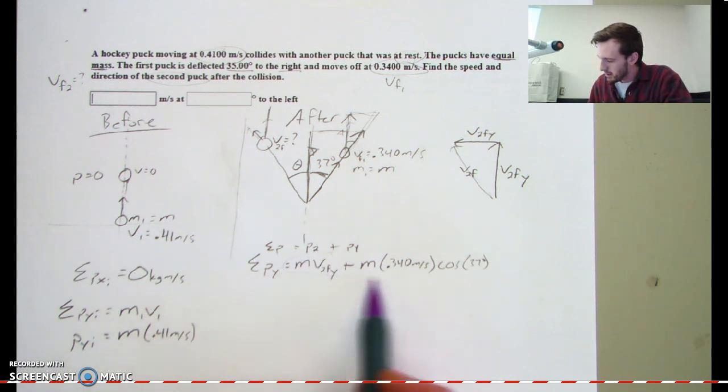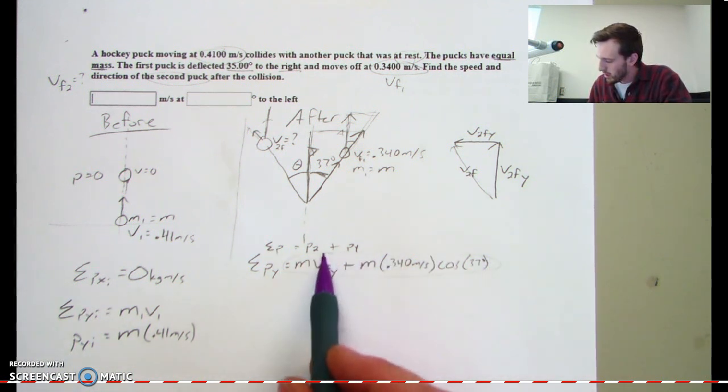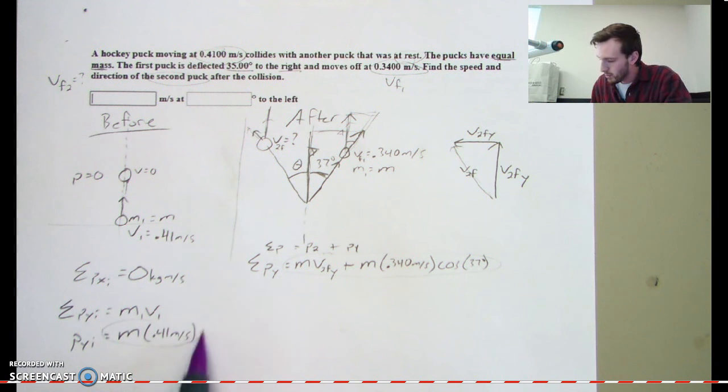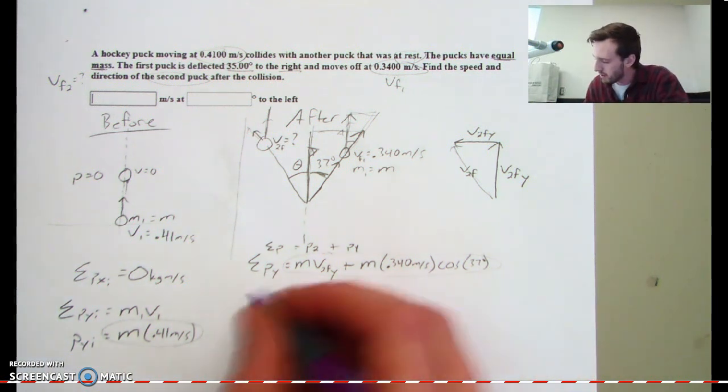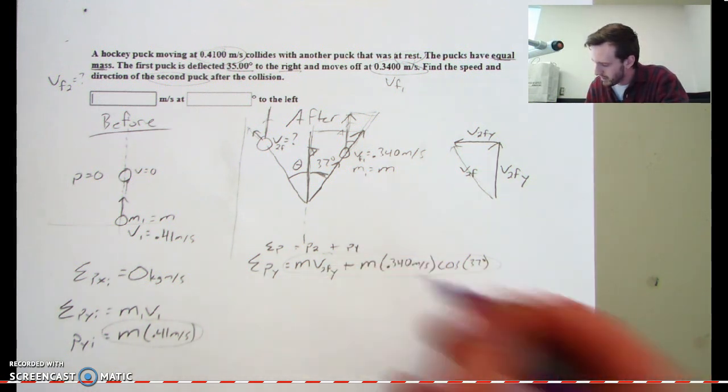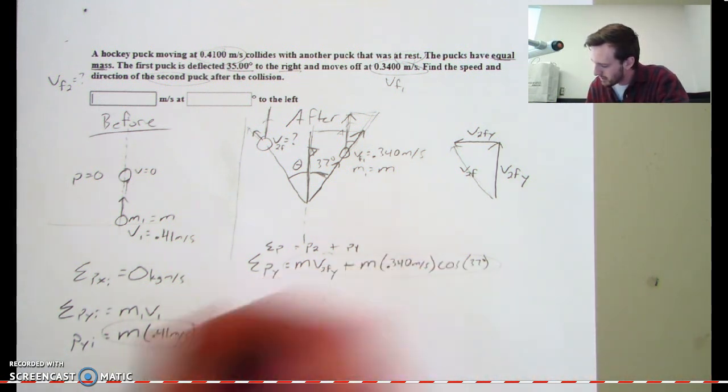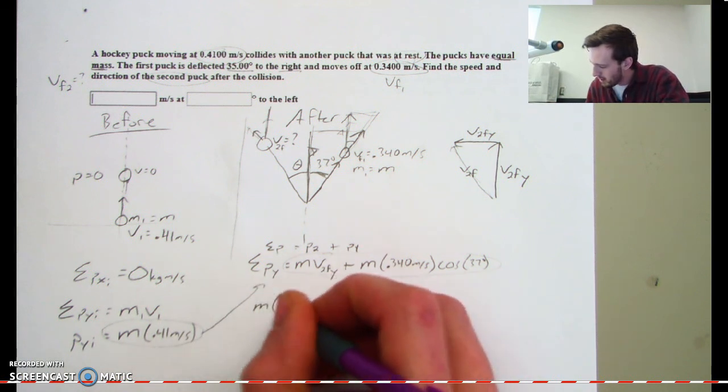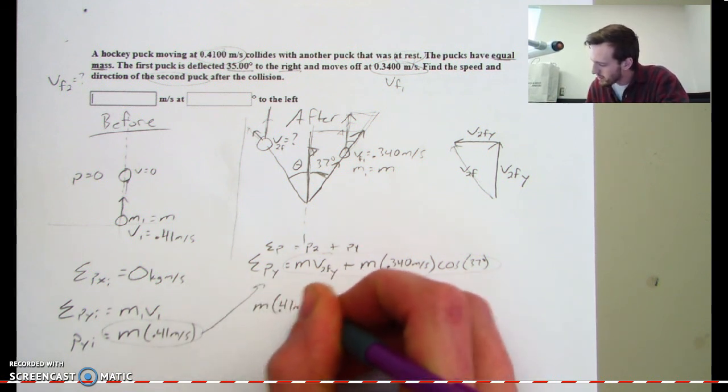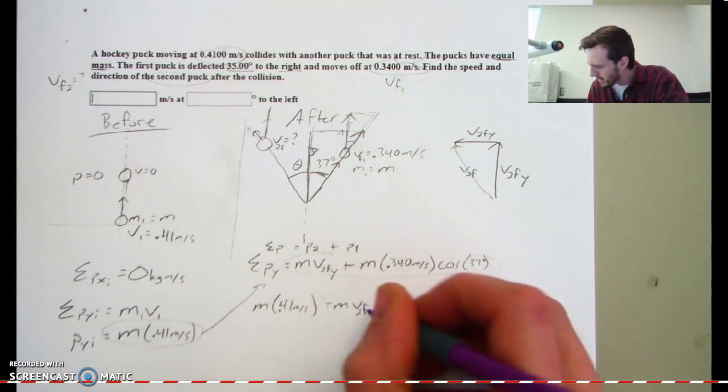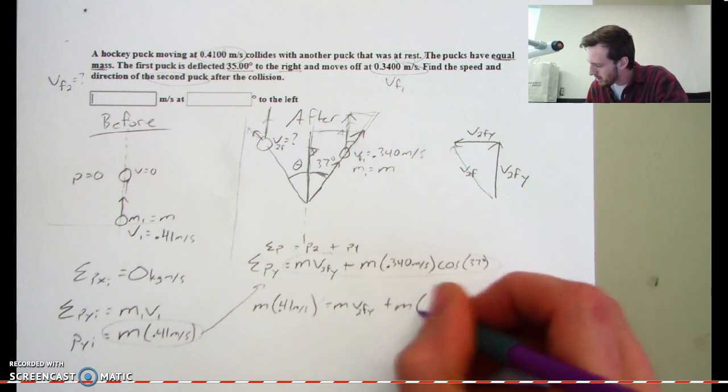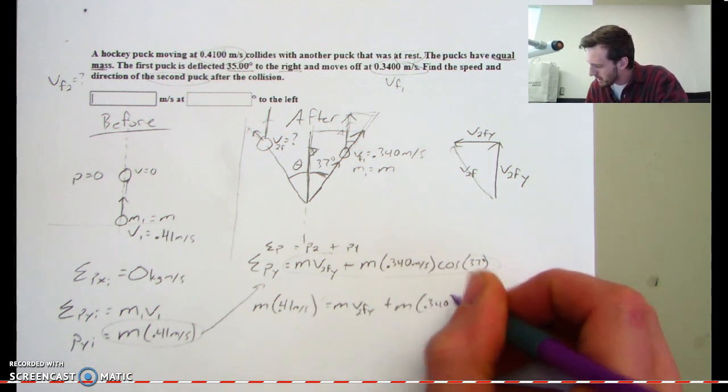And so by our trig rules, we actually have to use cosine of that angle 37 degrees, okay? So that's in the y direction. Now, if you notice, this is the sigma py after, this is the sigma py before. And as you can imagine, we're going to set them equal to each other because that's always the strategy for these momentum problems. It's set the total momentum before in a particular direction equal the total momentum after in that particular direction. Now, the interesting thing about this problem, let's go ahead, I'm going to just move this up here, and I'm going to say m.41 meters per second equals mv2 final y plus m.34 cosine of 37.